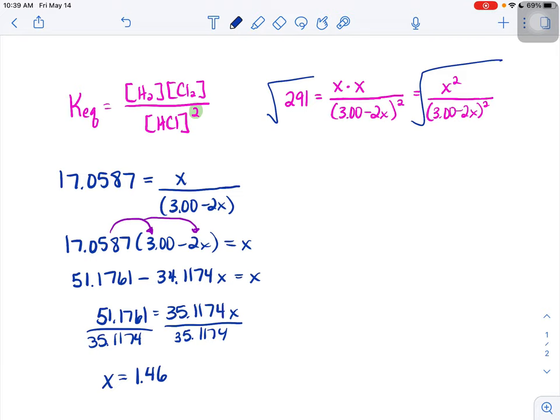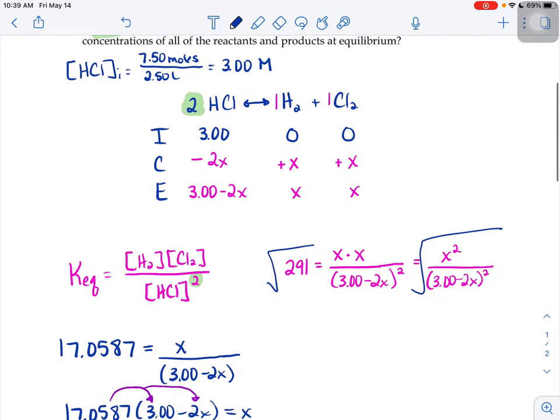So what did x represent again? Well, if I go back to my ice table, x was the variable that we assigned for the change of hydrogen. So what that means is our hydrogen ion or hydrogen concentration at equilibrium is going to be 1.46 molar. Same thing with chlorine because it was also x.